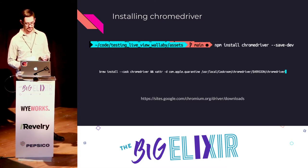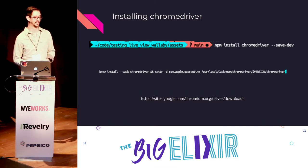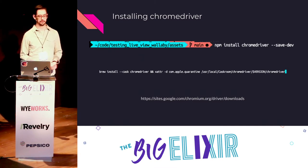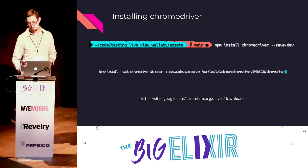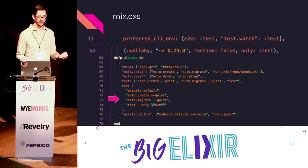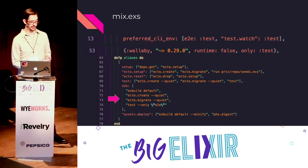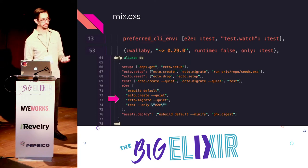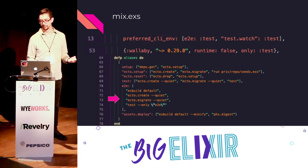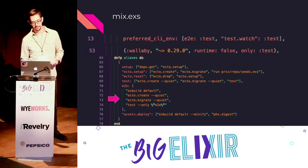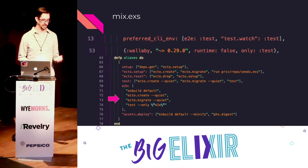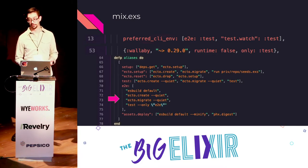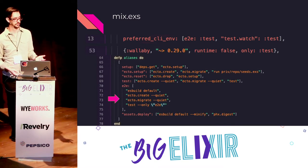From there, we need to update the mix.exs. You need to add the Wallaby dependency. I like to add an end-to-end helper, or ETE alias, because browser tests are a little bit slower and I like to segregate them from the rest of my test suite. I also want to make sure any JavaScript or CSS changes I've made get reflected in my tests, so we add that ESBuild default before running the traditional test suite.